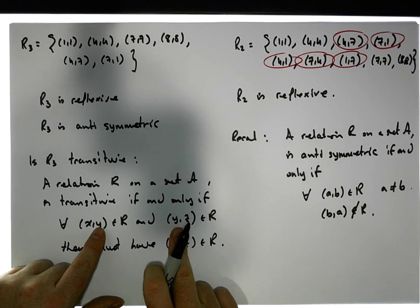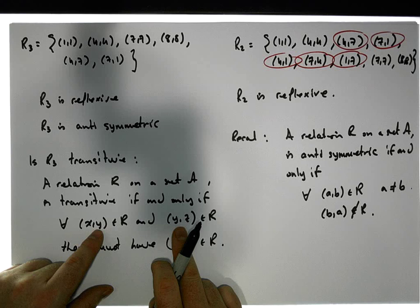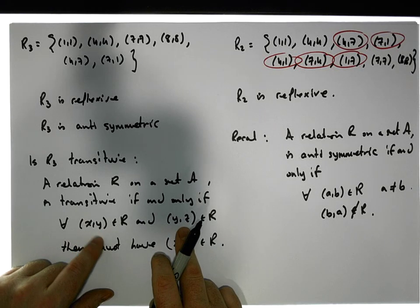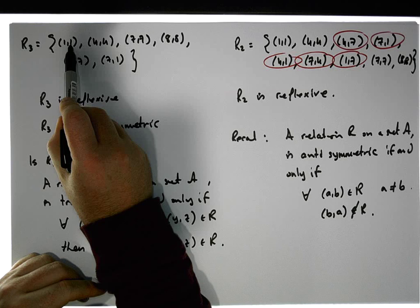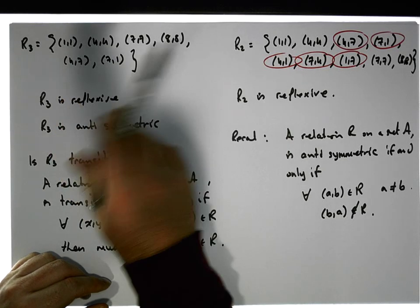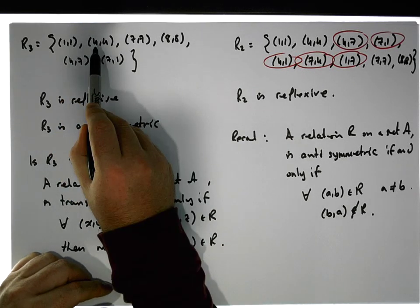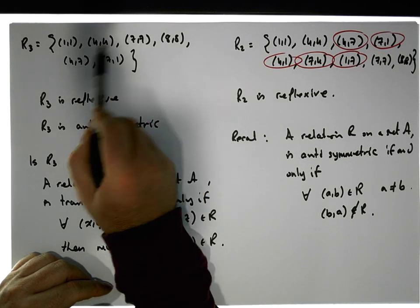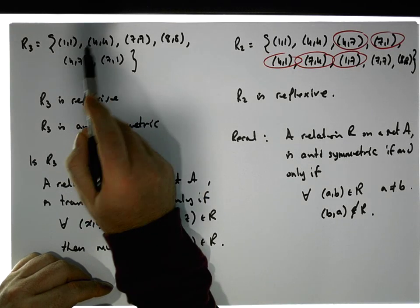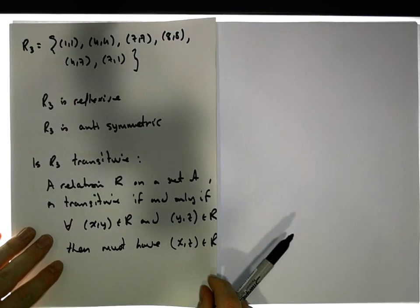We could take all the ordered pairs and see how many journeys we can take. For example, we can go from one to one here. Can we go from one anywhere to anywhere else? No, we can't, so we just exclude it. Here we can go from four to four. Can we go from four to anywhere else? Well, we can go from four to seven. So let's have a look at this. I'm just trying to brute force this through from a transitivity perspective.